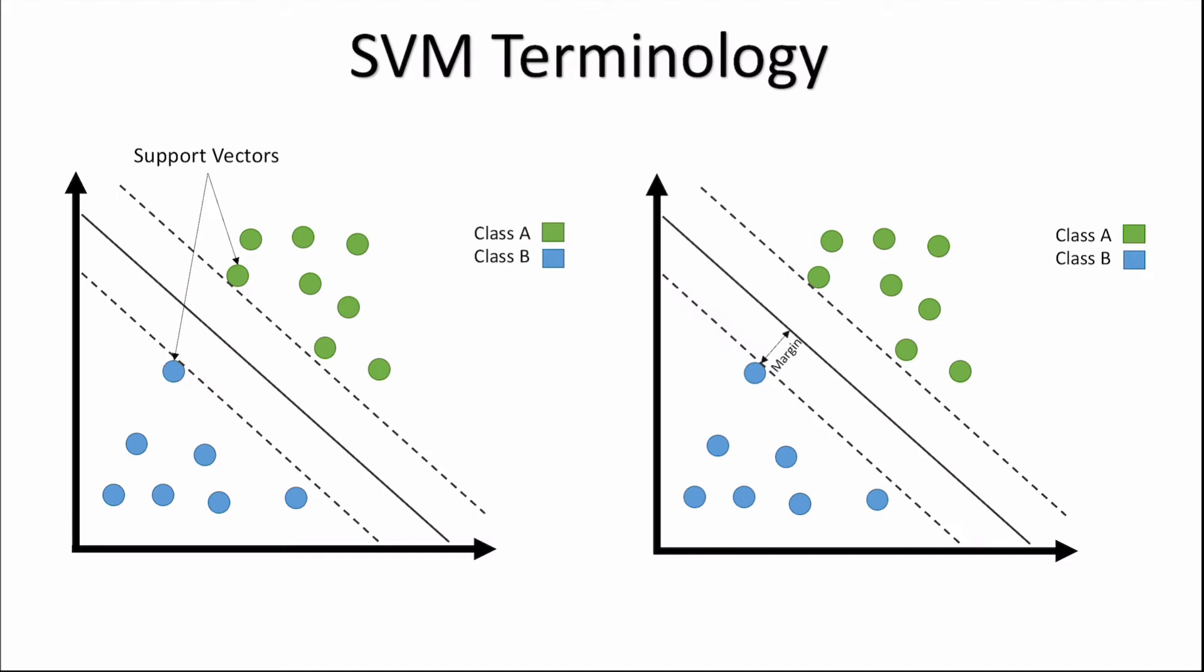There is also the margin, which is the distance our hyperplane is away to the closest vector. So in this case, the hyperplane is at the midpoint of the two support vectors here and here, so the margin values are the same. So this margin here will be the same as this margin here.